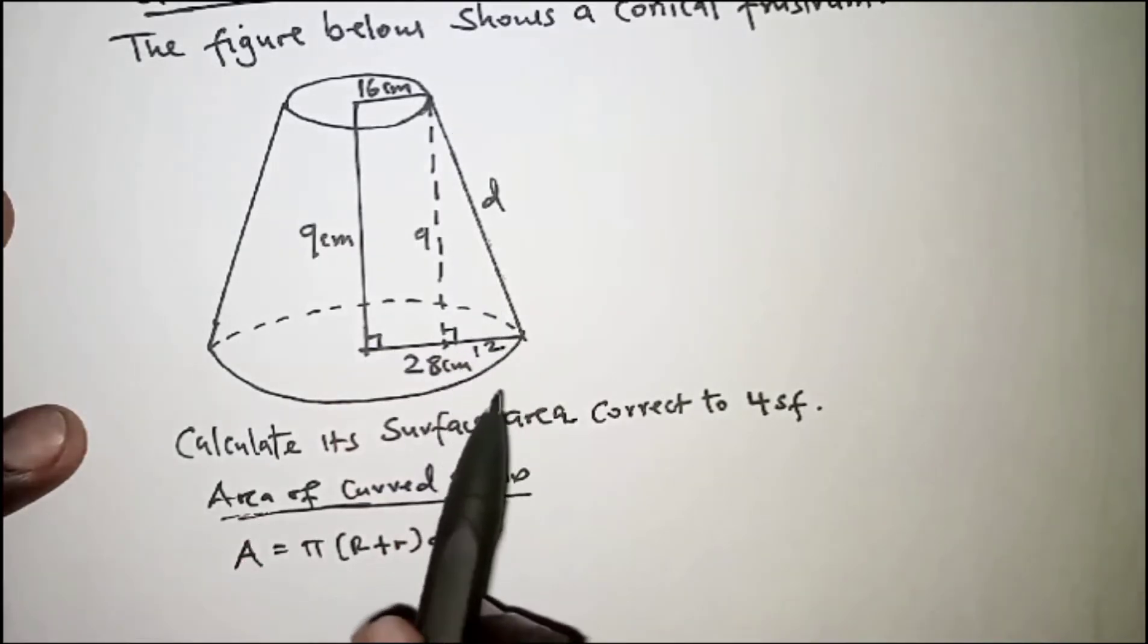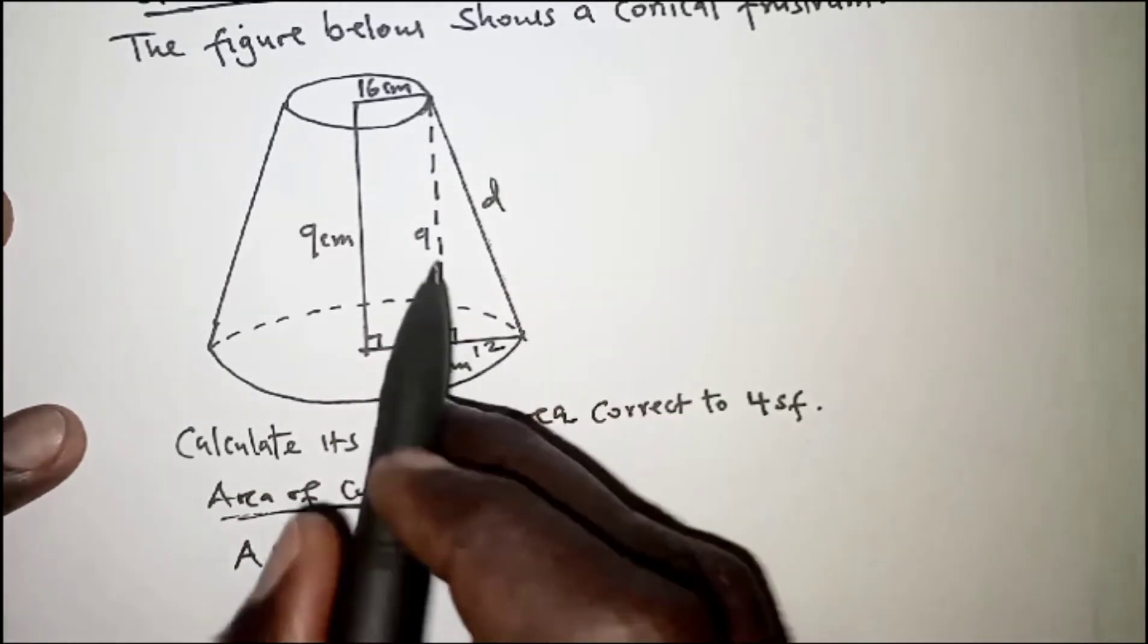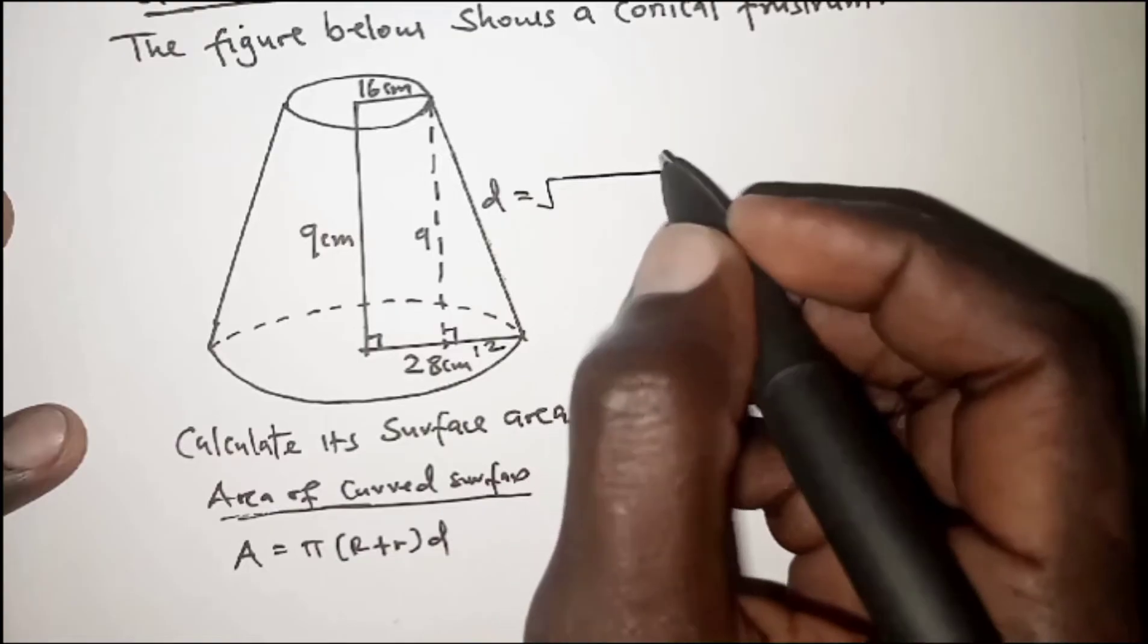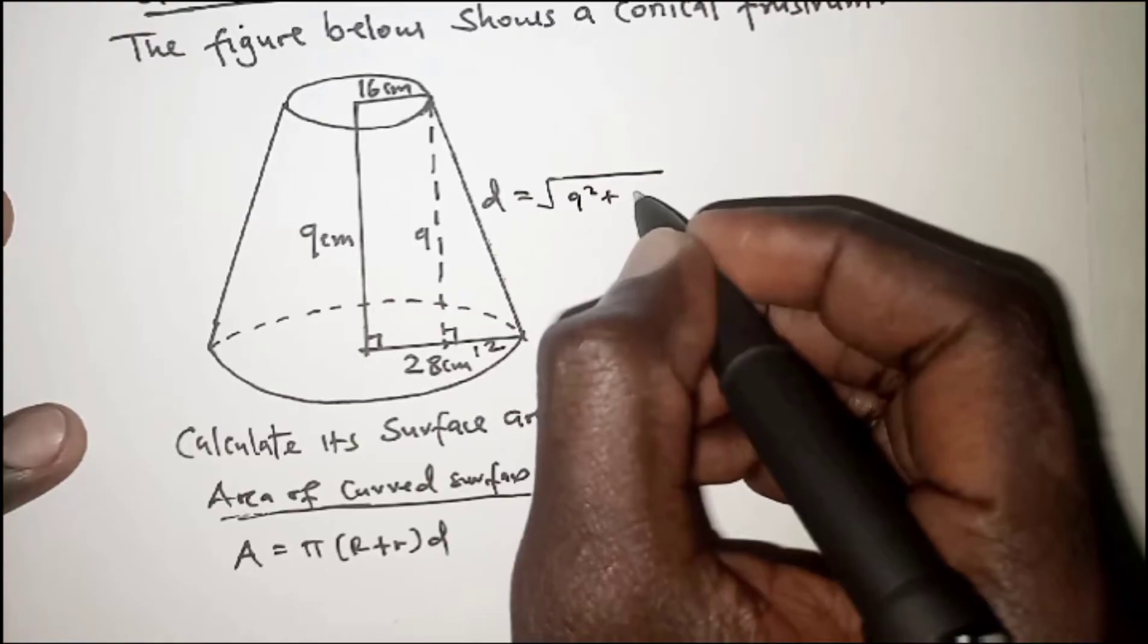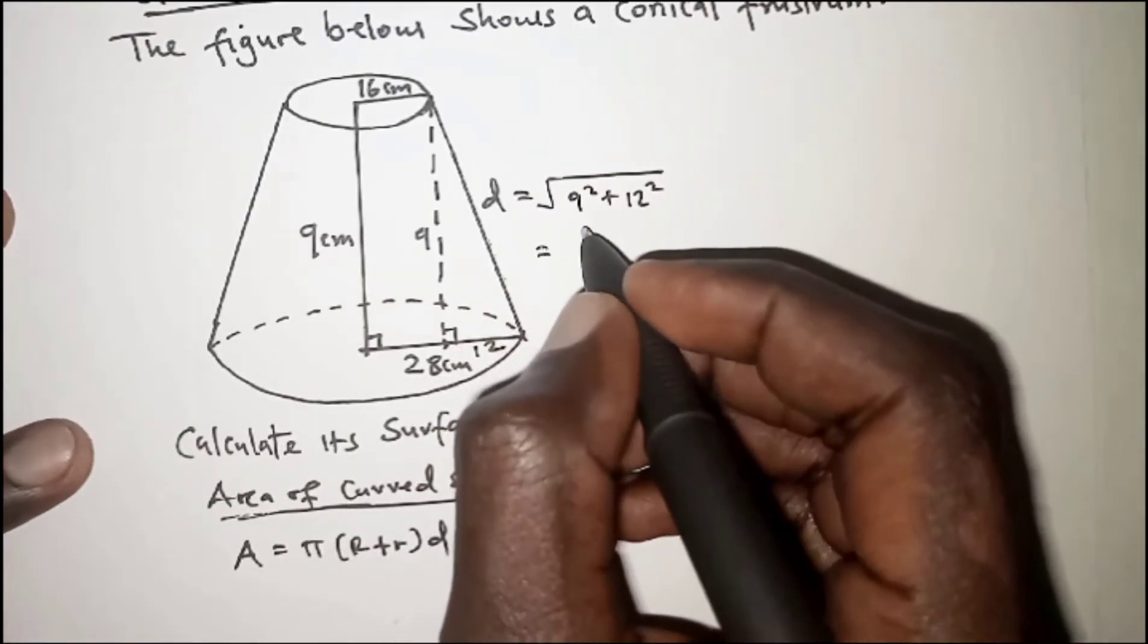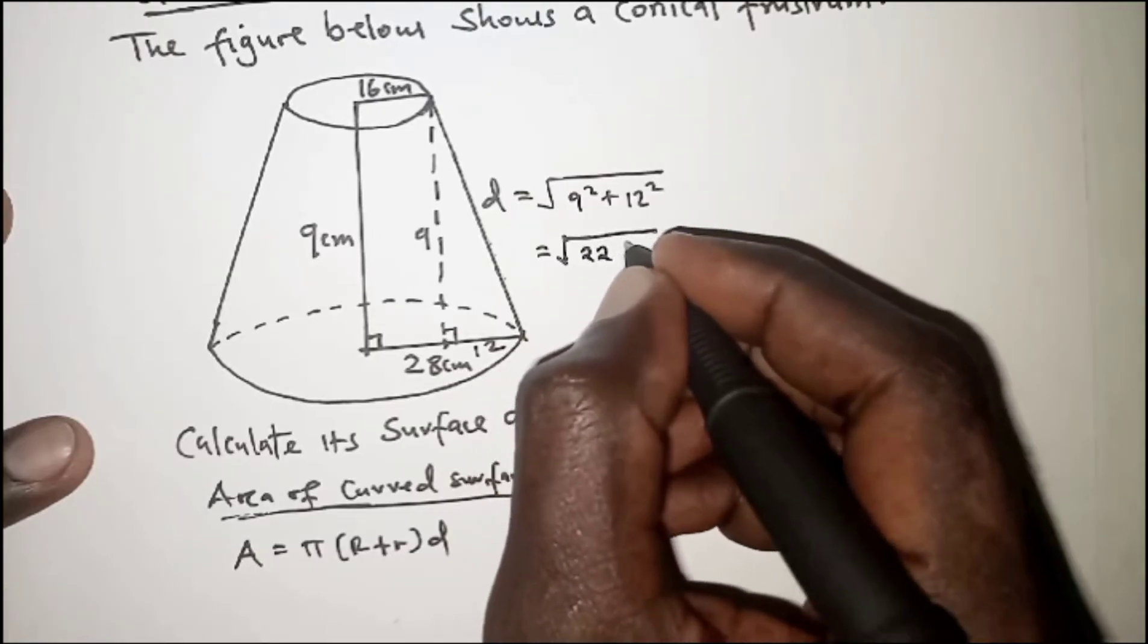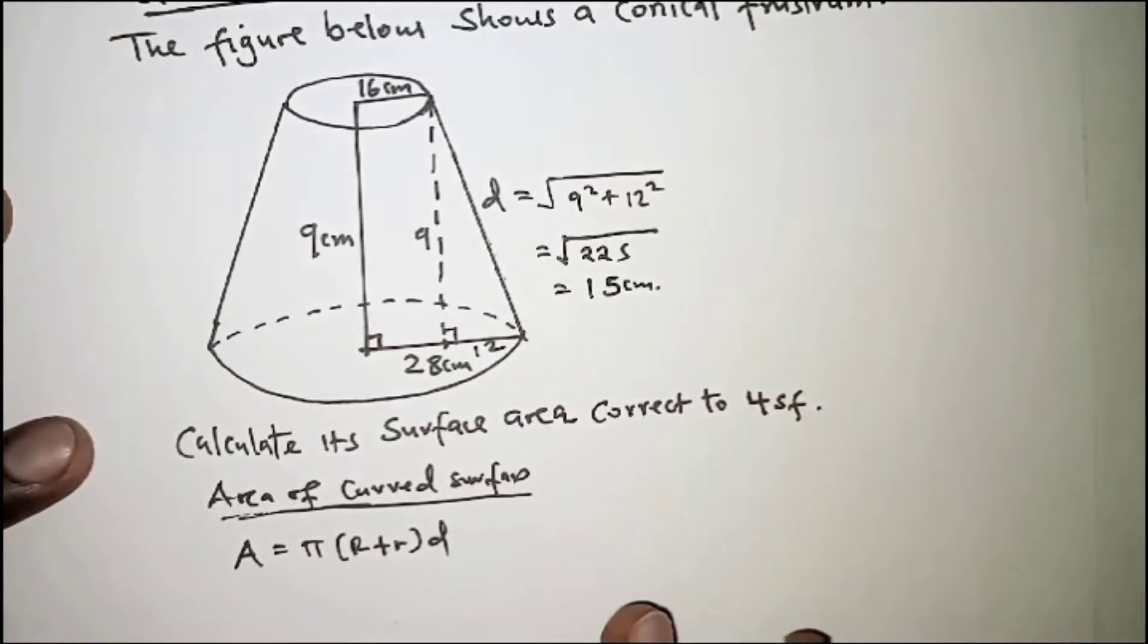What we're going to do is use Pythagorean theorem to get the value of d. So d here is the hypotenuse, so we say d is equal to the square root of height squared plus 12 squared, which is the base squared. So this will be the square root of 225, and that is 15 centimeters.